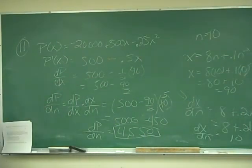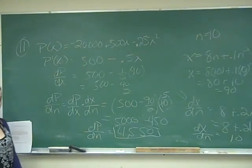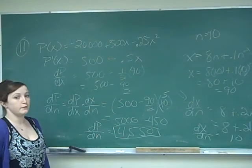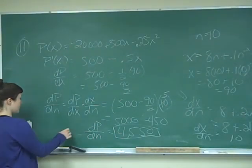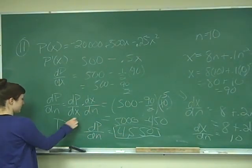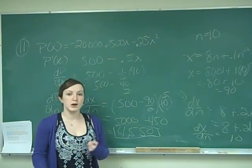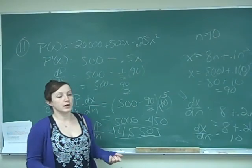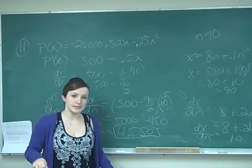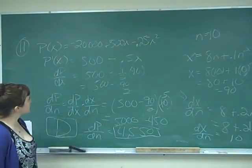And that is your answer, and it says that answer D is that profit is increasing by $4,550 per worker. So that is your answer. And remember, it is increasing because this value that we get is positive. If it had been a negative value, then our profit would be decreasing.